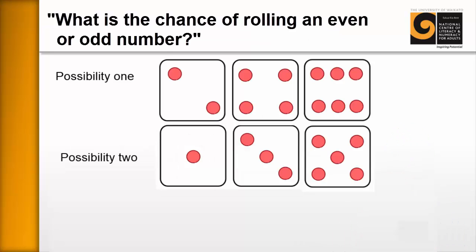And now we're going to ask the learners a slightly more complex question. Staying with the dice, we ask, what is the chance of rolling an even or an odd number? And if we come back to the concept of the sample set, we can see that although there are six possible outcomes, only half of these can be even, 2 4 6.